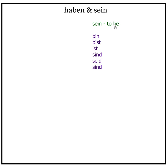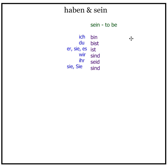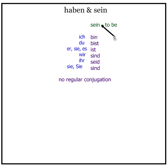Conjugation of sein, to be: ich bin, du bist, er/sie/es ist. Wir sind, ihr seid, sie/Sie sind. Can you find what's irregular about the conjugation of sein? That's right — there's nothing regular about it. You don't see the infinitive of sein or a stem-plus-ending pattern in any of the conjugation. It is the most irregular verb; it does not follow any pattern. Sein just has to be memorized.